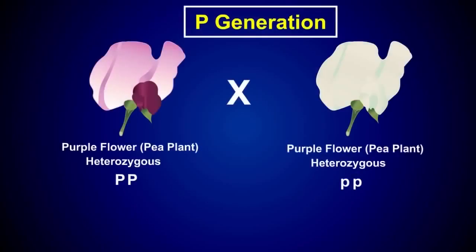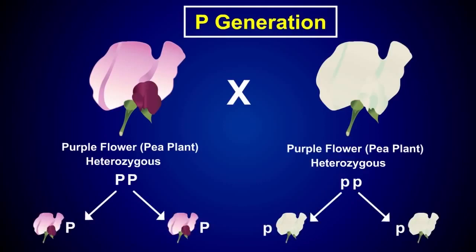To determine the principles of segregation, Mendel crossed two plants that differed in one phenotype. In the cross shown here, the members of the parent generation, or P generation, differ in only one trait, which is color. The purple pea plant can only produce gametes that code for more purple pea plants, and the white pea plant can only produce gametes that code for more white pea plants.